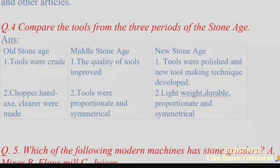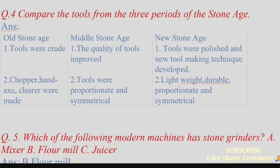Question 4: Compare the tools from the three periods of the Stone Age. Old Stone Age: tools were crude. Middle Stone Age: the quality of tools improved. New Stone Age: tools were polished and new tool-making techniques developed.